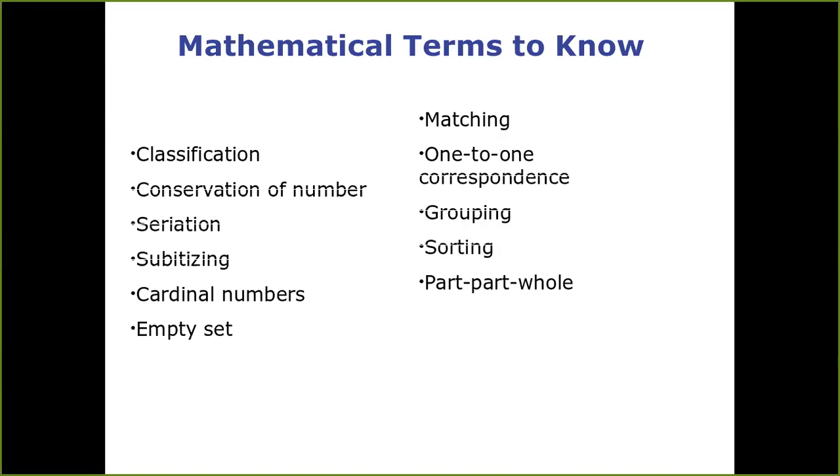Some other terms that are there, conservation of number means that the child recognizes that if you change some properties of a set, it doesn't change the number. So if you have five pennies and you spread them out, it doesn't mean that there's more pennies. There's still five. So they retain that concept that the number stays the same.